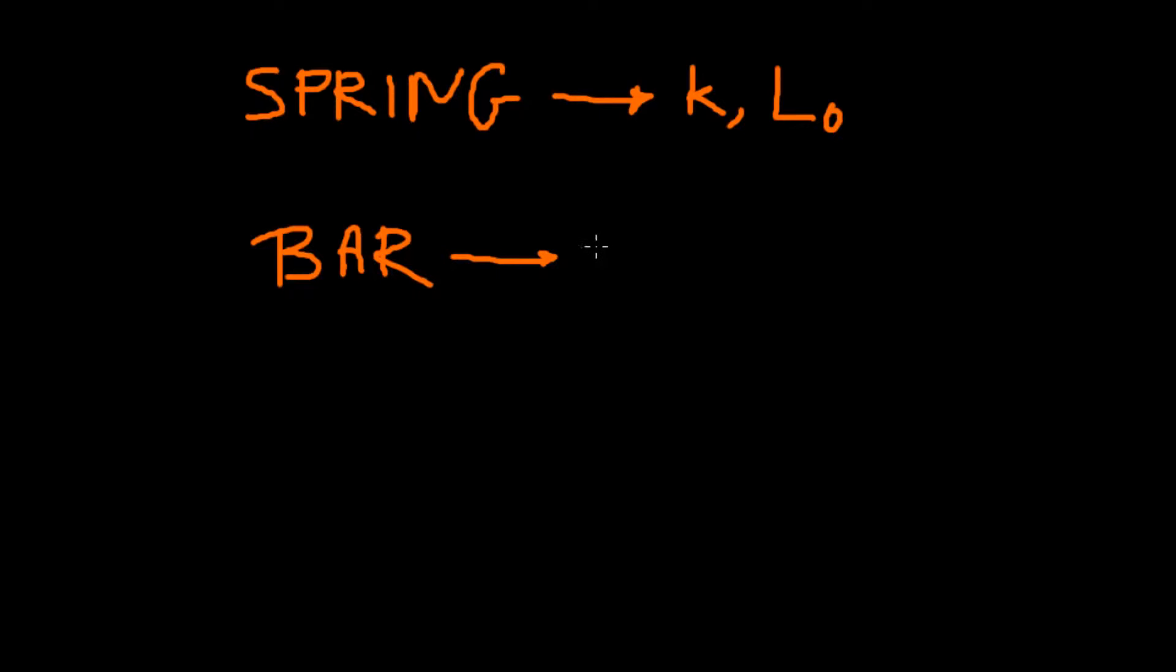And a bar of material, that is a linear elastic bar of material, has an elastic modulus E and a cross-sectional area A and the same length L0.